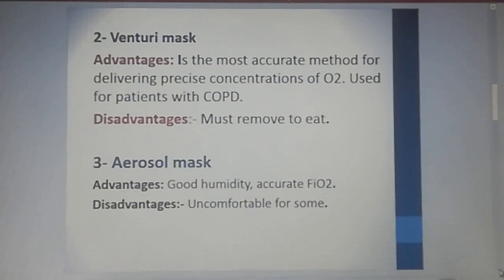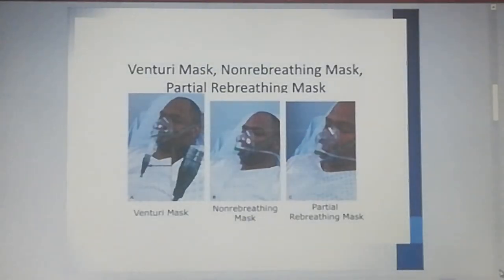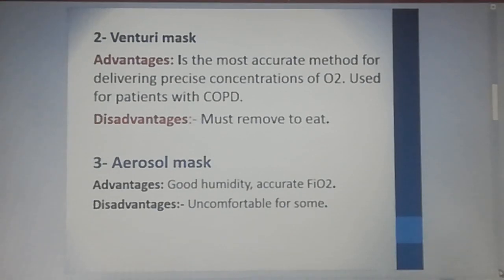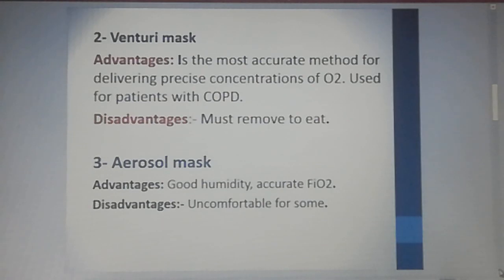The venturi mask's advantage is that it is the most accurate method for delivering precise concentration of oxygen and is used for patients with chronic obstructive pulmonary disease; the disadvantage is it must be removed to eat. This picture describes the venturi mask. The aerosol mask is used with the nebulizer; its advantage is good humidity and accurate FiO2 — the oxygen concentration during inspiration of air. Its disadvantage is that it is uncomfortable for some people.